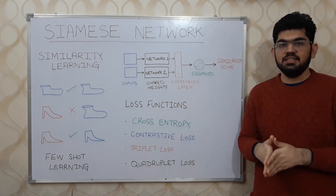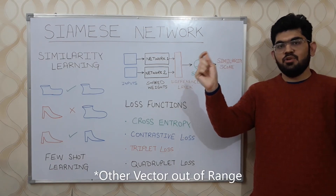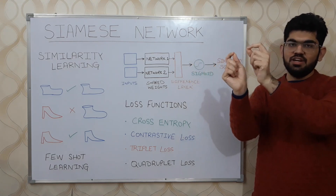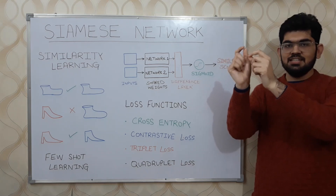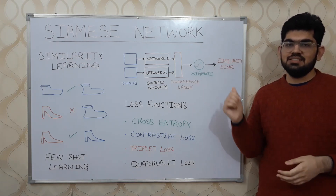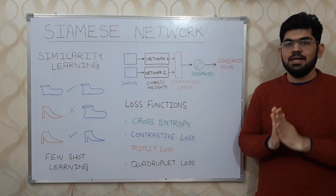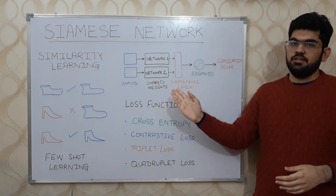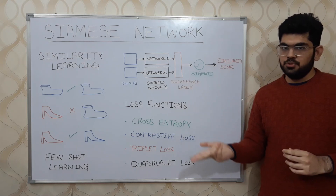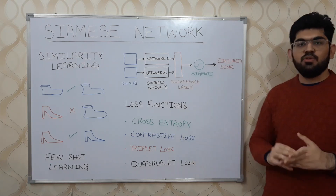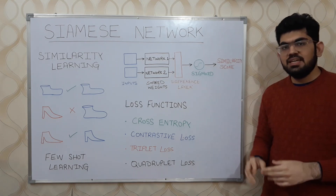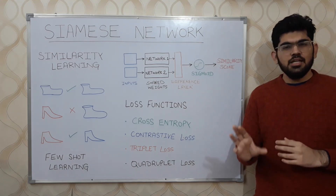In a 2D vector space, two vectors with a large Euclidean distance are quite dissimilar, whereas two vectors with a small Euclidean distance are pretty similar. There are various different techniques used to train Siamese networks, differing based on their loss functions and the number of inputs provided. In cross-entropy and contrastive loss, we provide two inputs. In the case of triplet loss, we provide three inputs. And in the case of quadruplet loss, we provide four inputs.